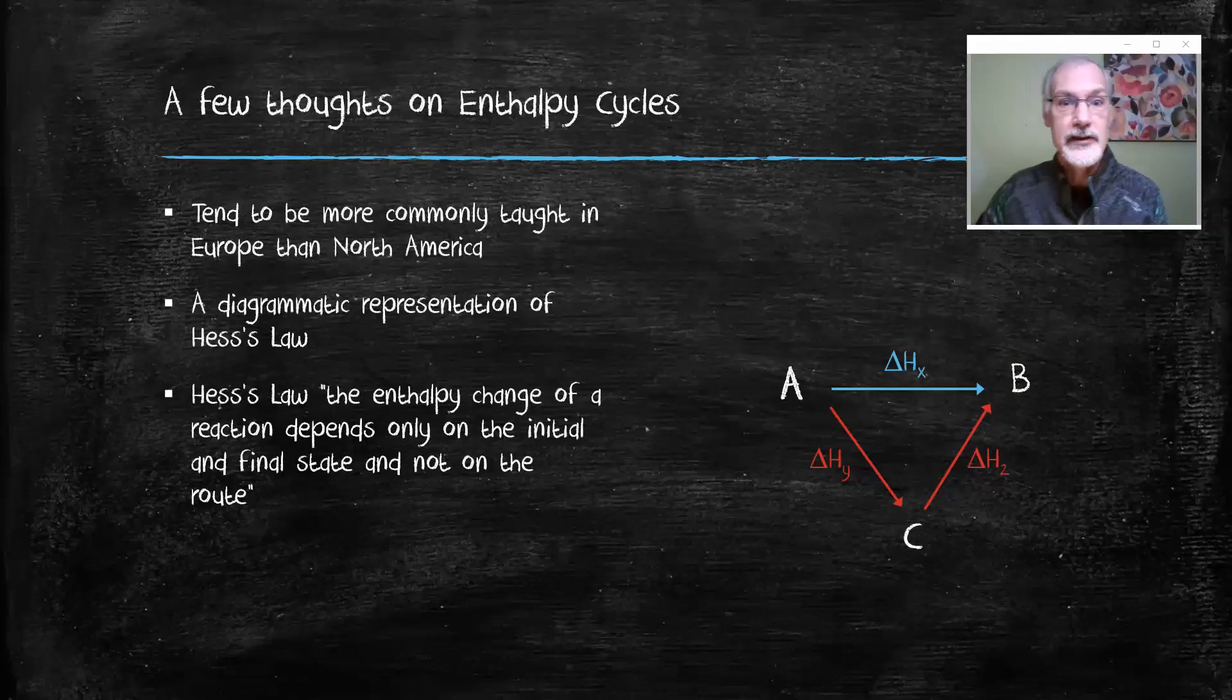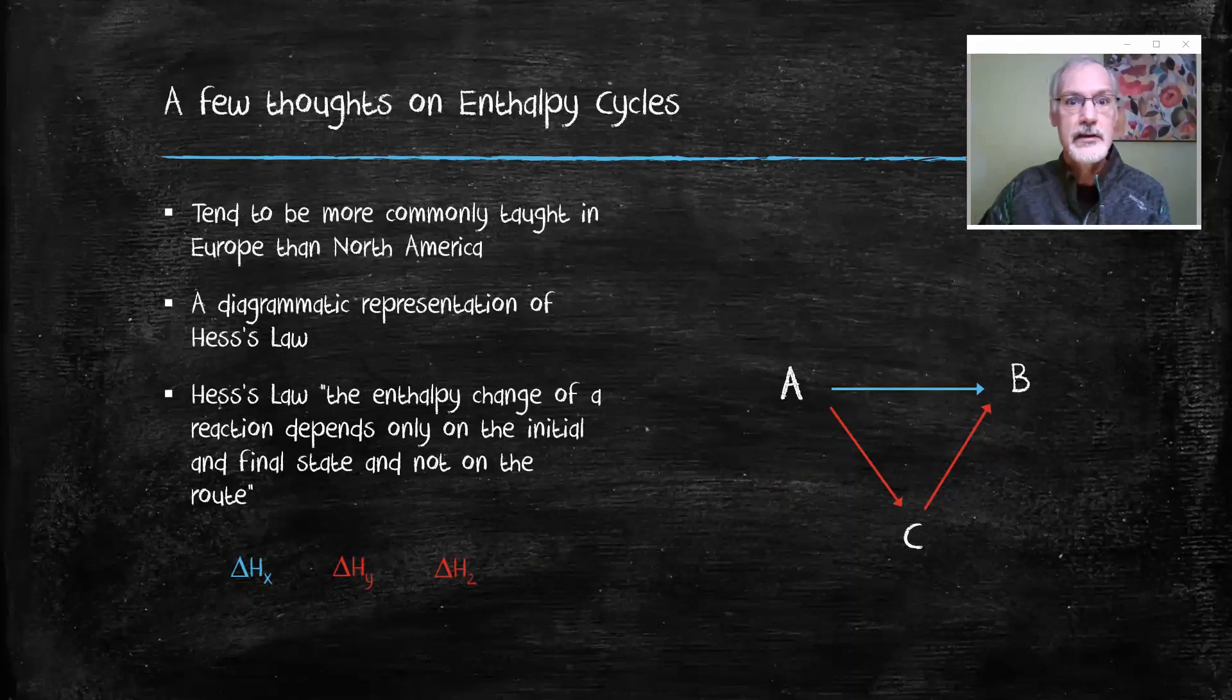So in the example I have here at the side, I want to figure out the heat to go from A to B. I can do that two ways. One way is directly as shown in the blue, or an alternative path would be to go from A to C followed by going from C to B. According to Hess's law, these two routes, being that they start and finish in the same place, should produce the same amount of energy. So for this simple diagram this law would hold.